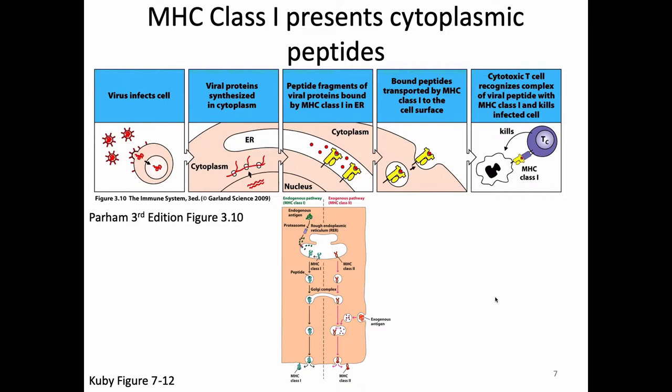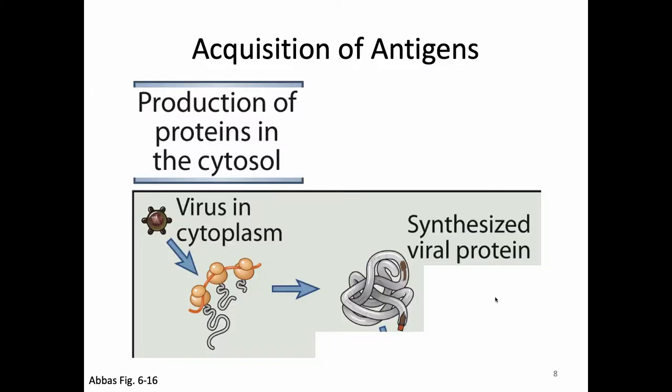The first step is acquisition. For class I, the cell doesn't really have to do anything to acquire the antigen — it just gets unlucky and gets infected. So for acquisition in class I: infection. The cell gets infected and there's some virus or microbe making proteins in the cytoplasm. That's it for acquisition.